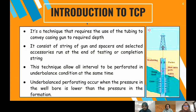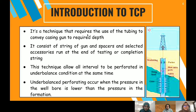TCP is a technique that requires the use of tubing to convey the perforating gun to the required depth. It consists of a string of guns and spacers with selected accessories run at the end of a testing or completion string. This technique allows all intervals to be perforated under underbalanced conditions at the same time. Underbalanced perforation occurs when the pressure in the wellbore is lower than the pressure in the formation.